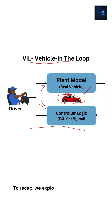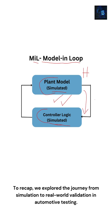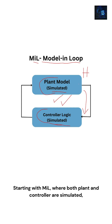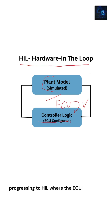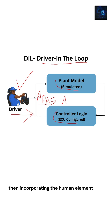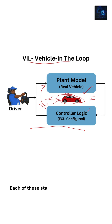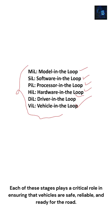To recap, we explored the journey from simulation to real-world validation in automotive testing: starting with MIL where both plant and controller are simulated, moving through SIL and PIL for early software and hardware performance checks, progressing to HIL where the ECU meets its virtual environment, then incorporating the human element with DIL, and finally validating the entire system with VIL. Each of these stages plays a critical role in ensuring that vehicles are safe, reliable, and ready for the road.